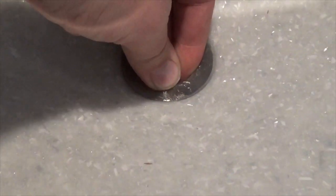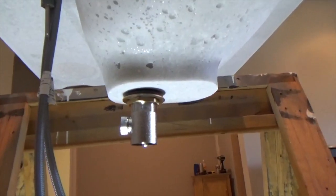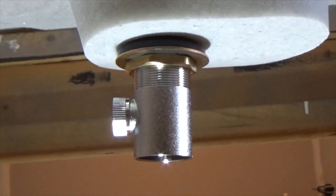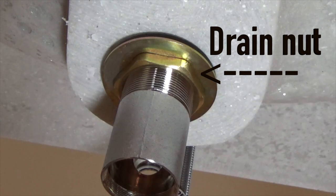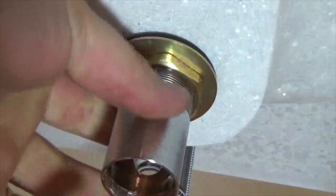You will need to firmly hold the flange while hand tightening the body into place. Note the orientation of the body in relation to the back of the sink top. While holding the body in this position, tighten the drain nut using channel lock pliers. Tighten until the drain gasket shows a good seal.